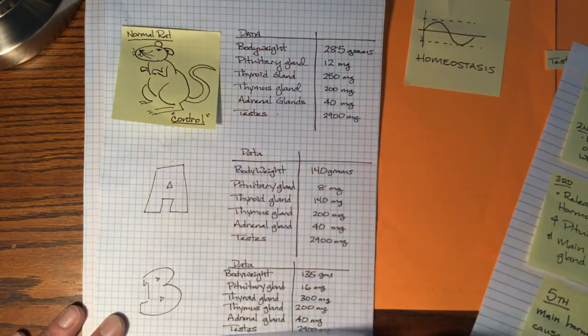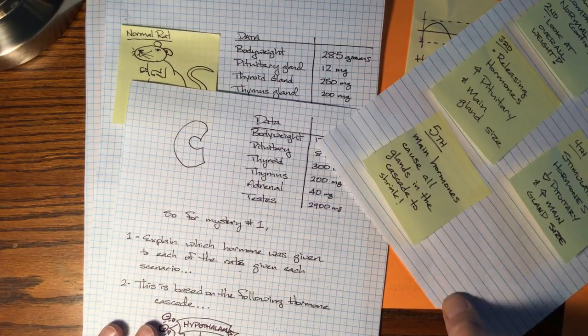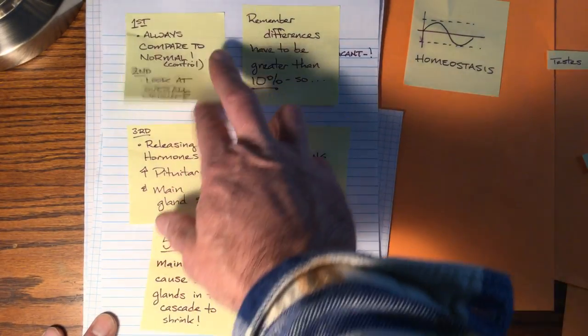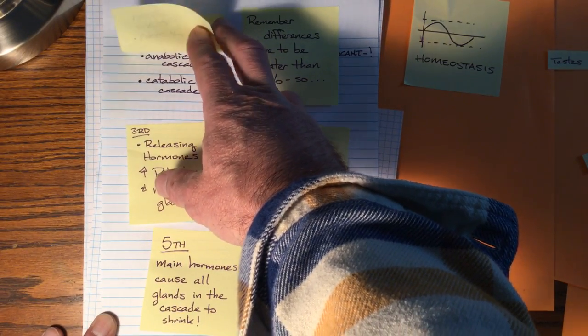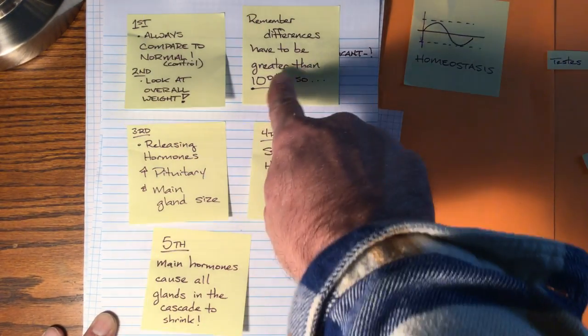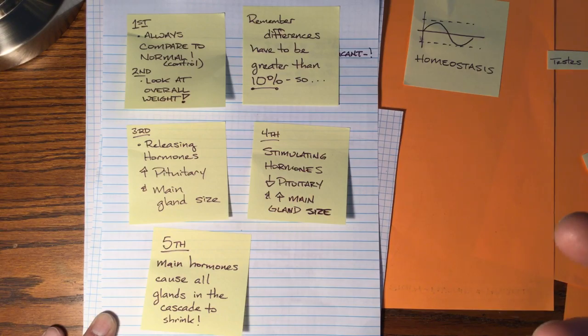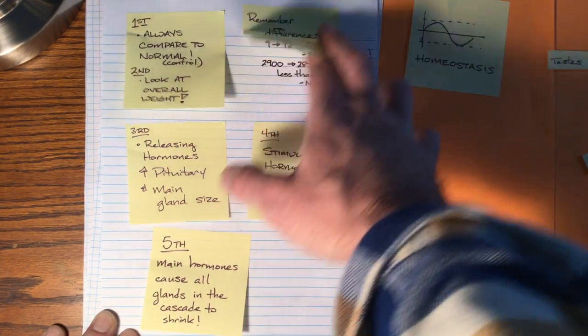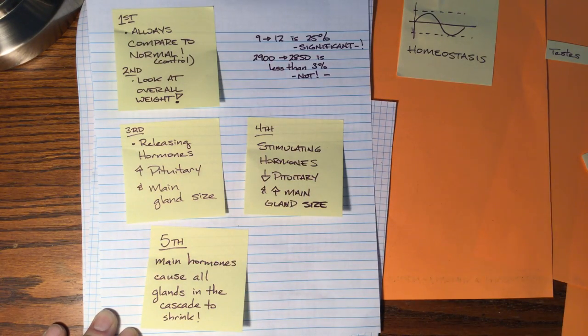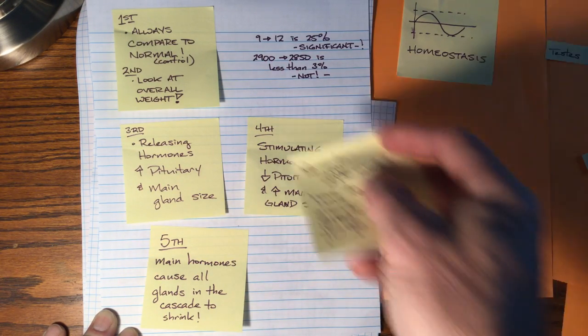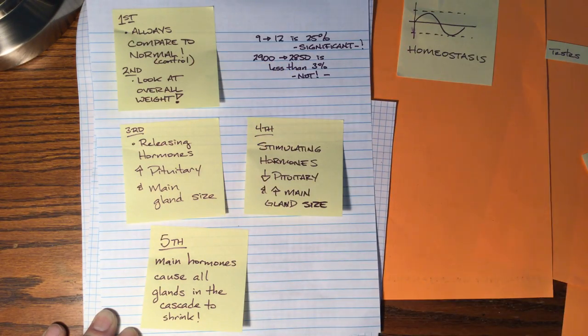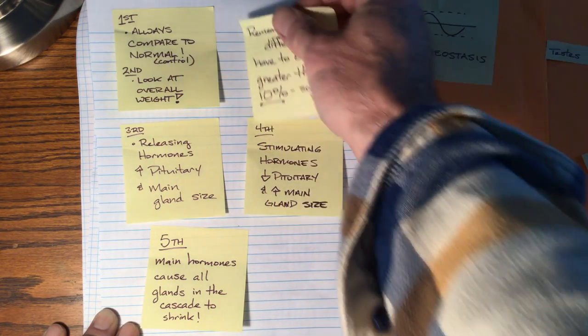Now, that's step one. Step two, after looking at the overall weight, because we're in a catabolic cascade and they all lose weight, first remember the differences between glands have to be greater than 10%. So if you see something like 9 to 12, that's a 25% difference. So 2850, that's less than 3%, that's not significant, ignore that.